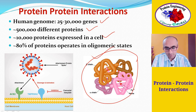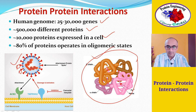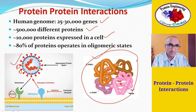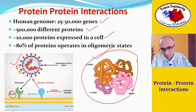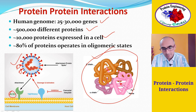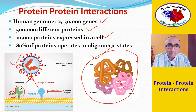Similarly, in the case of coronavirus infection, coronavirus has surface glycoproteins. On the surface, these glycoproteins bind to the ACE2 receptor on human cells. ACE2 receptors are angiotensin converting enzyme receptors. After binding to those receptors, the virus gets internalized and causes infection. The interaction between the surface glycoprotein of coronavirus and the ACE2 receptor is another example of protein-protein interaction.